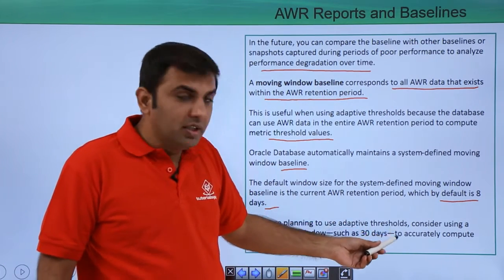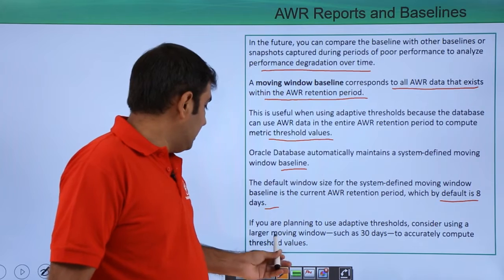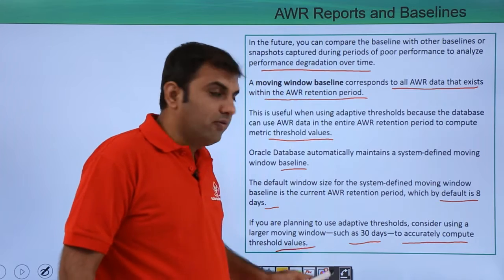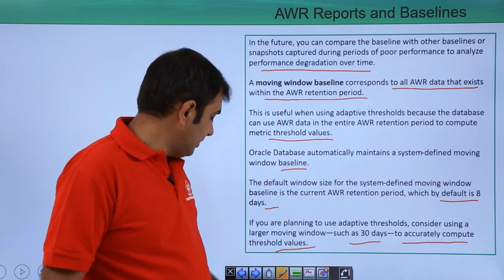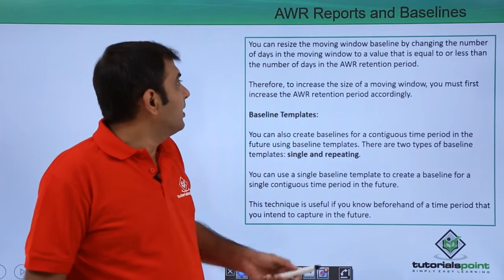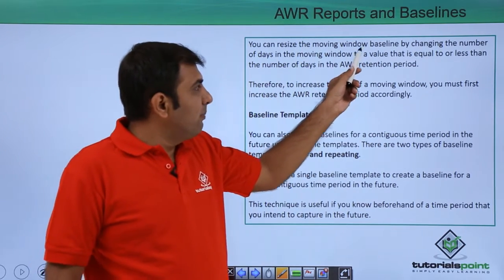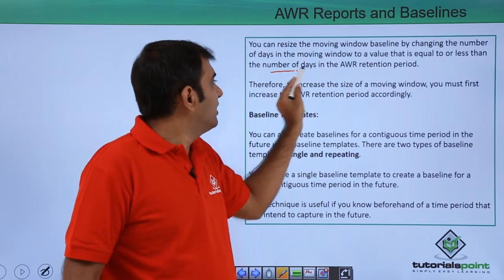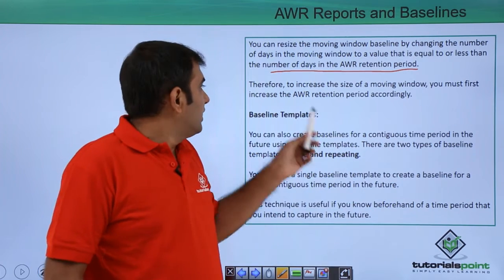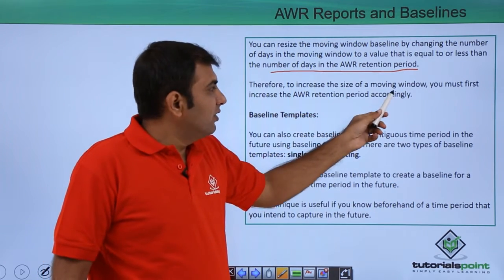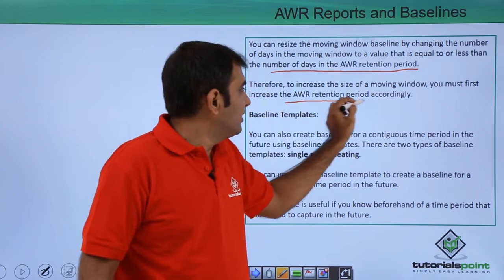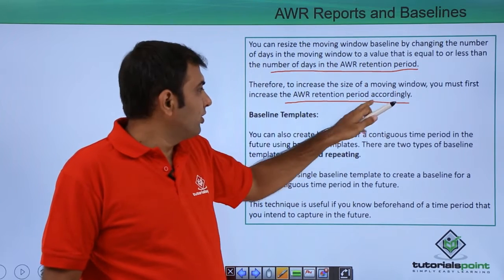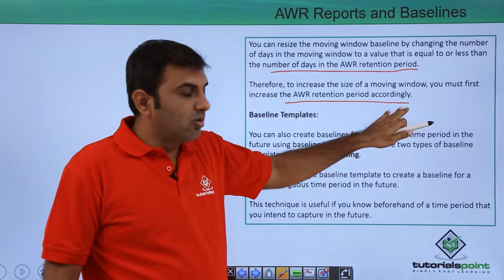If you are planning to use adaptive thresholds, consider using a larger moving window such as 30 days to accurately compute threshold values — you can increase from 8 days to 30 days. You can resize the moving window baseline by changing the number of days to a value equal to or less than the AWR retention period. To increase the size of the moving window, you must first increase the AWR retention period accordingly.